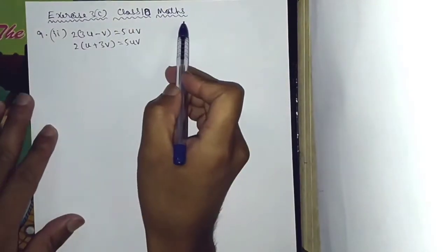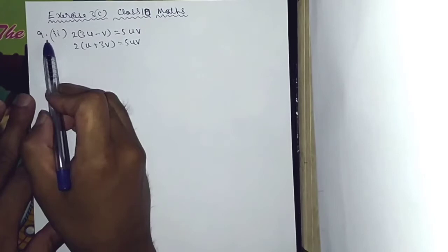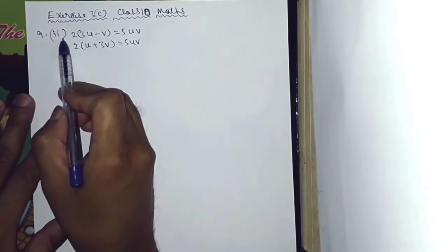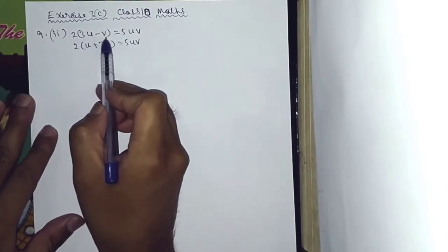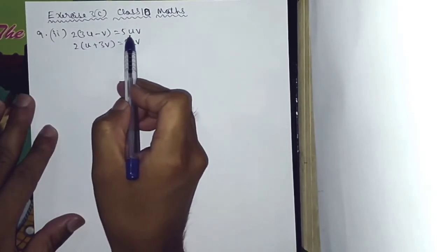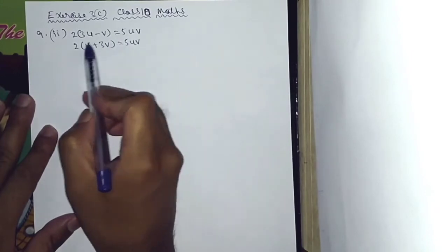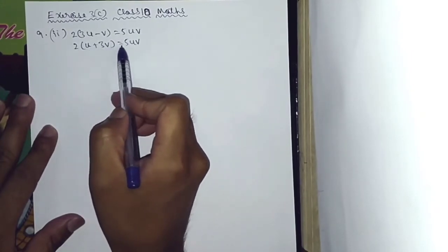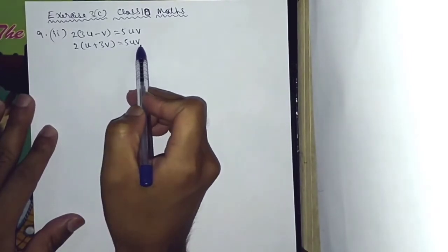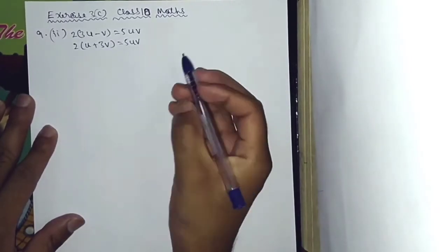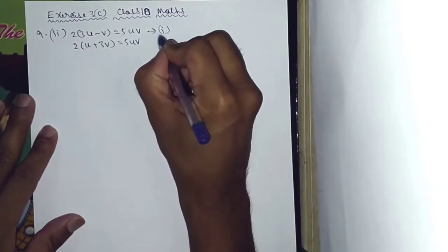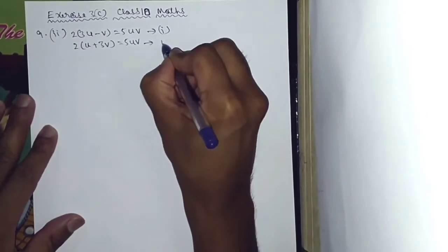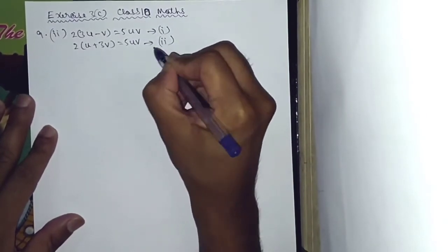Next is Exercise 3C, Class 10 Maths, number 9, sub-number 2. The two equations are: Equation 1: 2 into (3U minus V) is equal to 5UV, and Equation 2: 2 into (U plus 3V) is equal to 5UV.